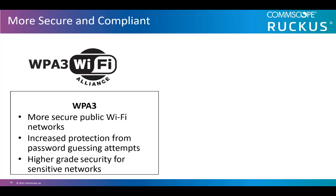Unleashed now provides WPA3 security versus WPA2 in the past. WPA3 adds new features to simplify Wi-Fi security, enable more robust authentication, deliver increased cryptographic strength for highly sensitive data markets, and maintain resiliency of mission-critical networks. All WPA3 networks use the latest security methods, disallow outdated legacy protocols, and require the use of the Protective Management Frames, or PMF.